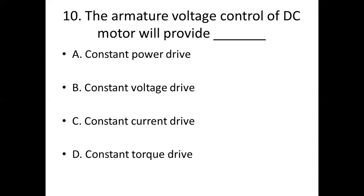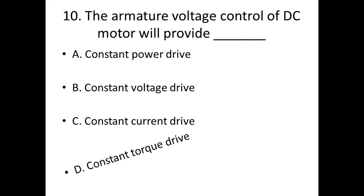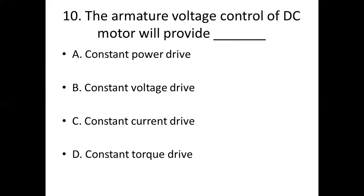Tenth one. The armature voltage control of a DC motor will provide dash. Option A: constant power drive. Option B: constant voltage drive. Option C: constant current drive. Option D: constant torque drive. Answer: Option D, constant torque drive.